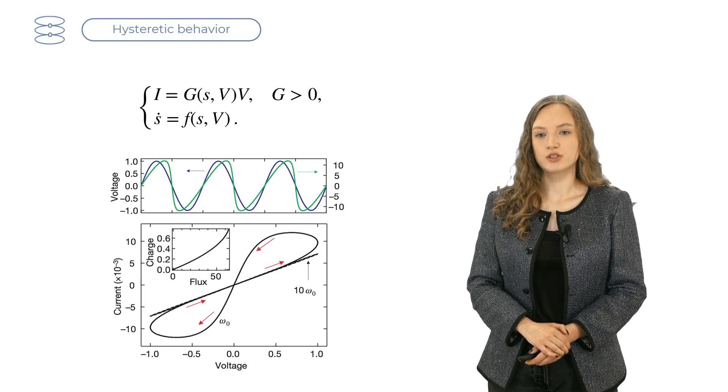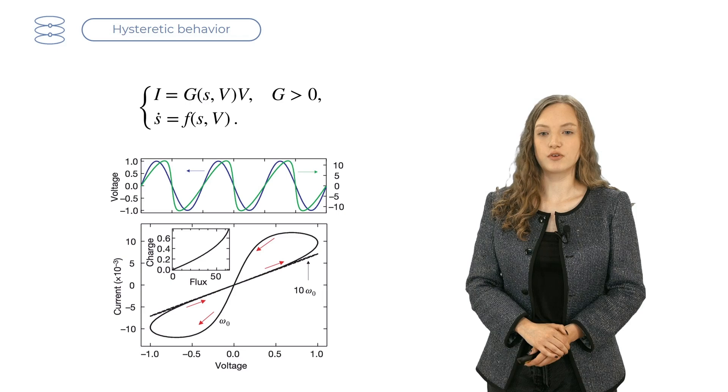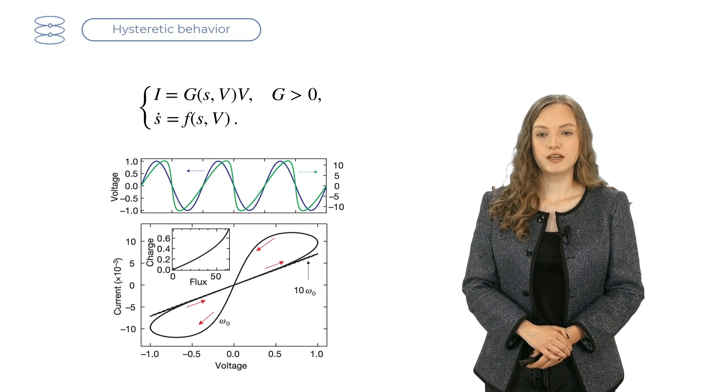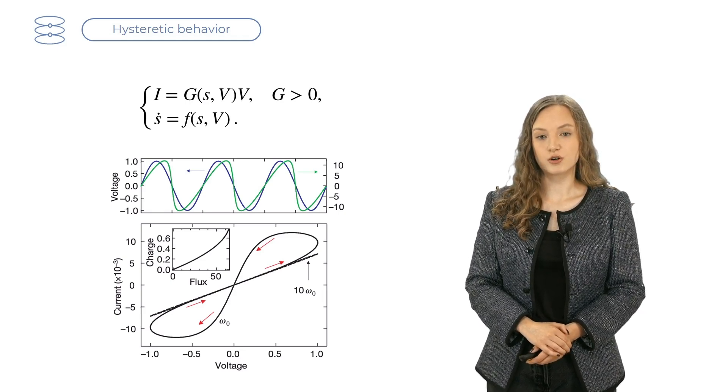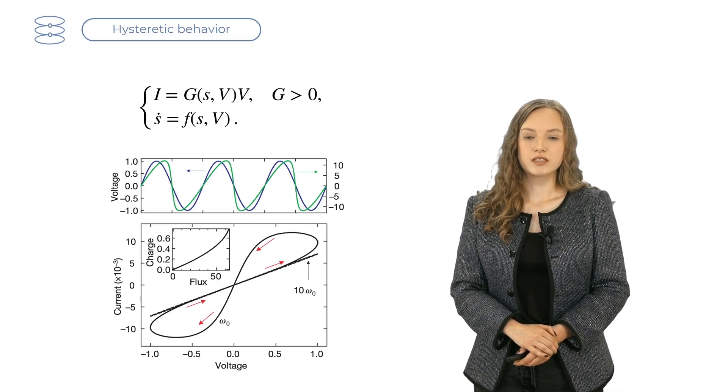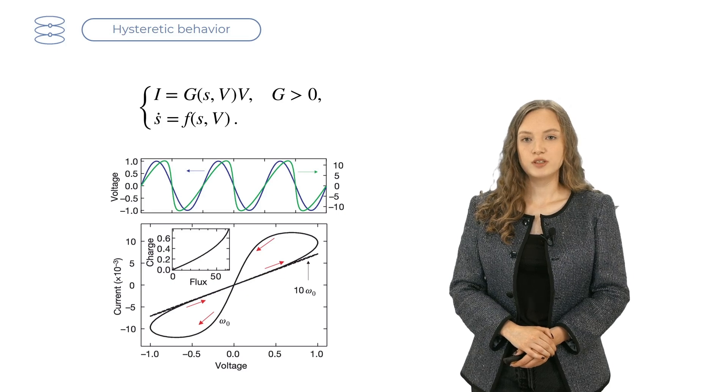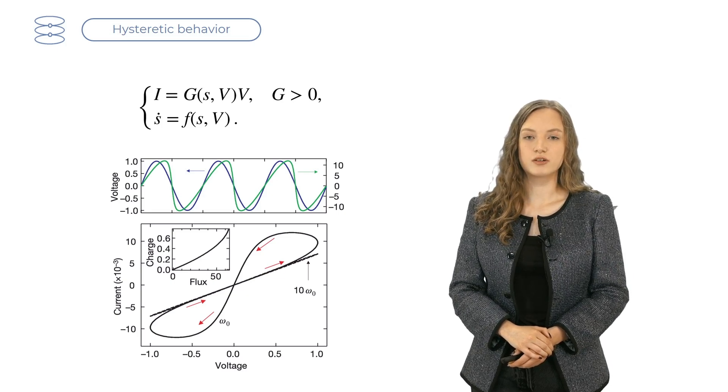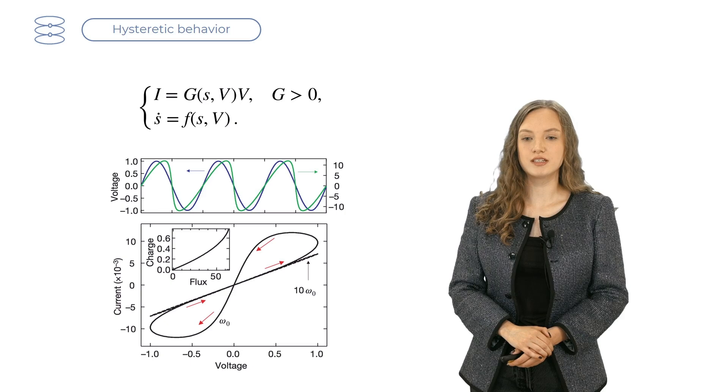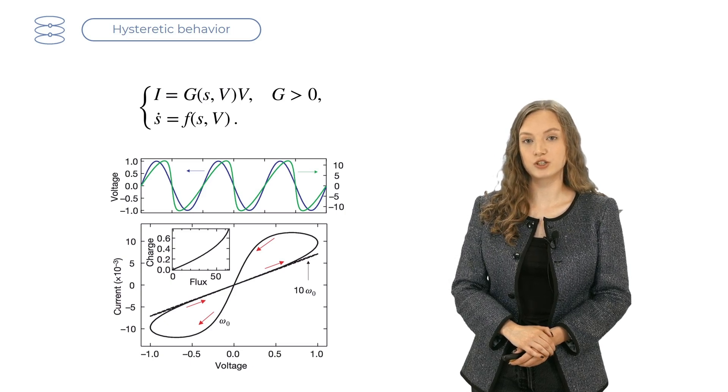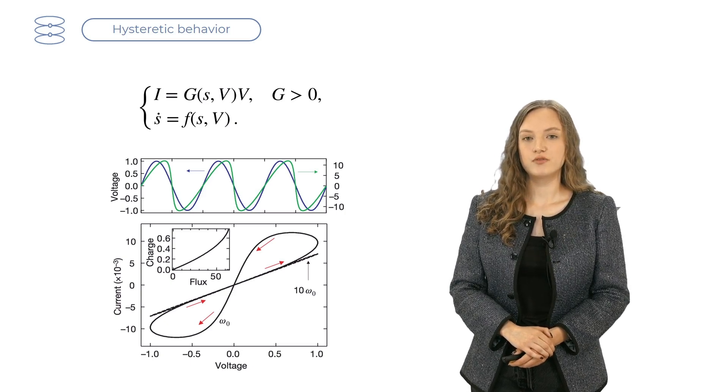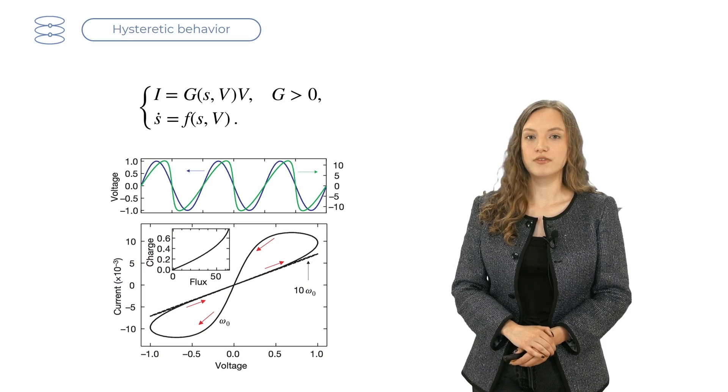If the applied voltage is periodical with some frequency ω₀, by plotting voltage versus current for this set of equations, we obtain a hysteresis curve. This hysteresis curve pinches at the zero zero point because zero voltage means zero current. As you can see, this is a double-valued function, which means that for each value of voltage, we have two different values of current.